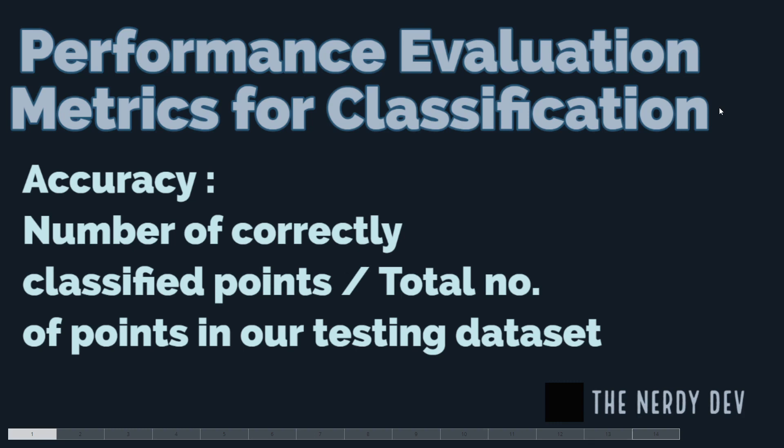Accuracy can vary from zero to one, with one being the best value and zero being the lowest. It is also one of the most simple performance metrics for classification.